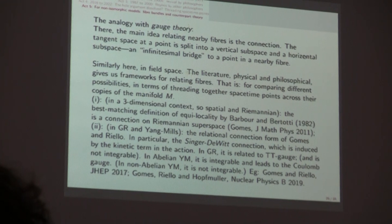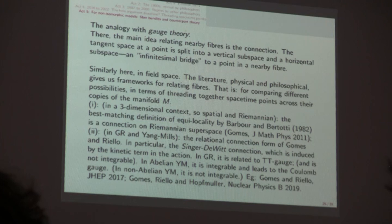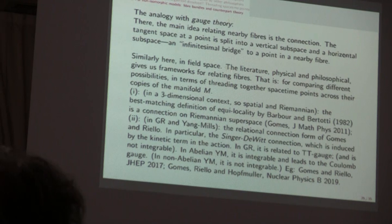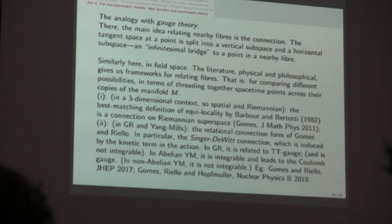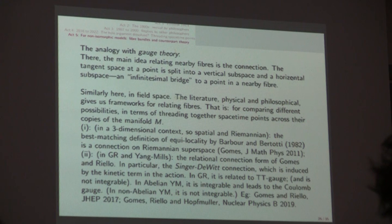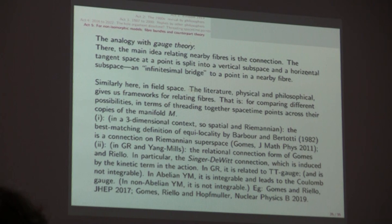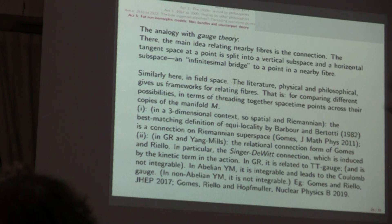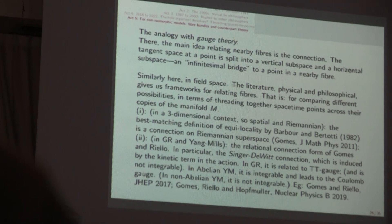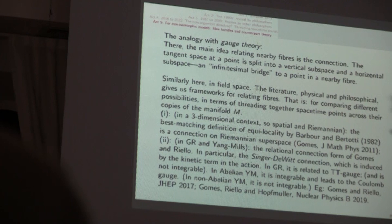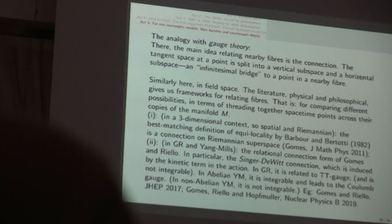So here's the analogy with gauge theory. In gauge theory, the main idea relating nearby fibers is the connection, and the tangent space at a point is split into a vertical subspace and a horizontal subspace. The horizontal subspace is sort of an infinitesimal bridge to points of a nearby fiber, or vectors within it. Similarly here in field space, in this infinite dimensional space, where the points are entire solutions, entire configurations of the metric on a fixed manifold big M. So really, what we're saying is that there's a literature, physical and philosophical, that is going to give you frameworks for relating fibers, and points on fibers that are not isometric.